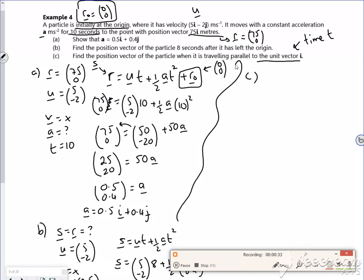Remember as well, the position vector just tells you where it is, whereas the velocity vector tells you which direction it's going. So I need a general velocity equation, right? So I can use v equals u plus at.